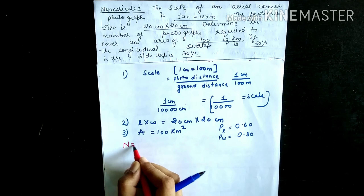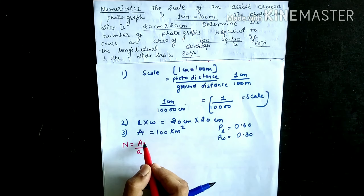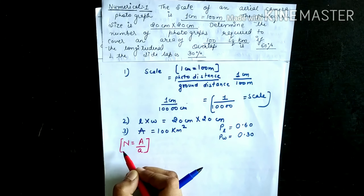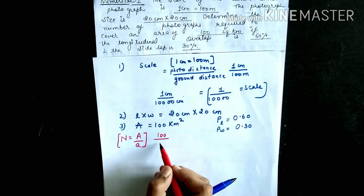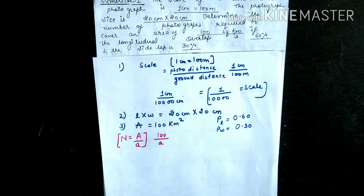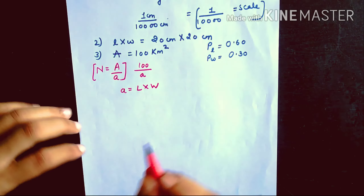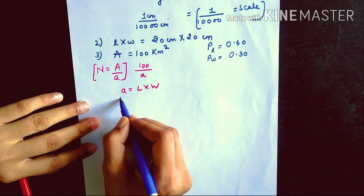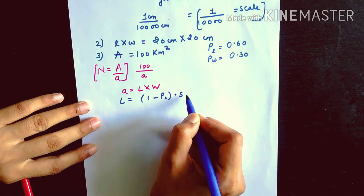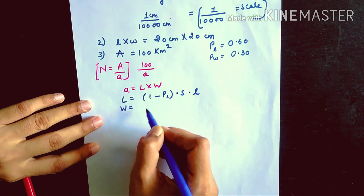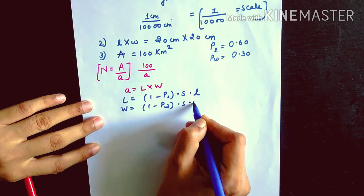The basic formula is N = A/a, where capital A is 100 km² (given) and small a needs to be calculated. The value of small a = L × W, where L = (1 − PL) × S × l, and W = (1 − PW) × S × w.